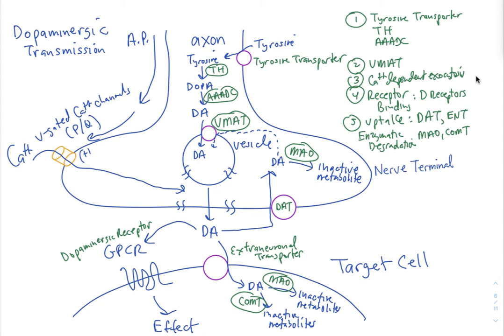This enzyme is sometimes called DOPA decarboxylase, because it's not totally selective for DOPA. Once dopamine is formed, it is taken up into the vesicle via the vesicular monoamine transporter, VMAT. To release neurotransmitter from the vesicle, the action potential must travel down to the nerve terminal and activate voltage-gated calcium channels.